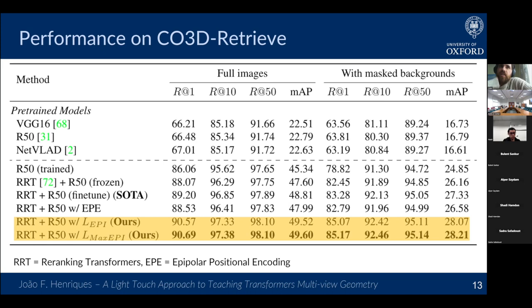The background masking results are interesting — even the baselines like ResNet-50 show worse performance with masked background. The attention will also try to attend to the background, and I think the background can still give clues about whether you're retrieving the correct object, even though we'd like the method to be 100% focused on the object. This is one more instance where networks don't solve problems the same way we do — we could investigate this further.